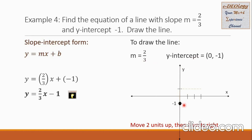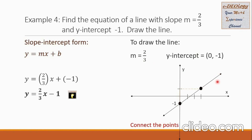Then let us find another point on the line so that we can connect it later and graph the line. Using the slope 2 over 3, with the y-intercept as our reference point, let us move 2 units going up — 1, 2 — and from this point go 3 units to the right — 1, 2, 3. Then we mark that point. Now we have 2 points, so we simply connect these points. This is the graph of the line y equals 2 over 3x minus 1. This is our final answer.